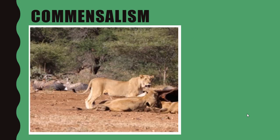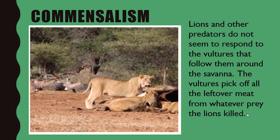Another example: way back at the edge of the trees in the dirt you can see some vultures, and then we have lions. The vultures don't bother the lions — the lions don't care. But the vultures will follow the lions around for obvious reasons: once the lions are done eating — you can see the chest cavity of whatever they killed — the lions leave, and the vultures are right there ready to pick off whatever leftover meat they can.